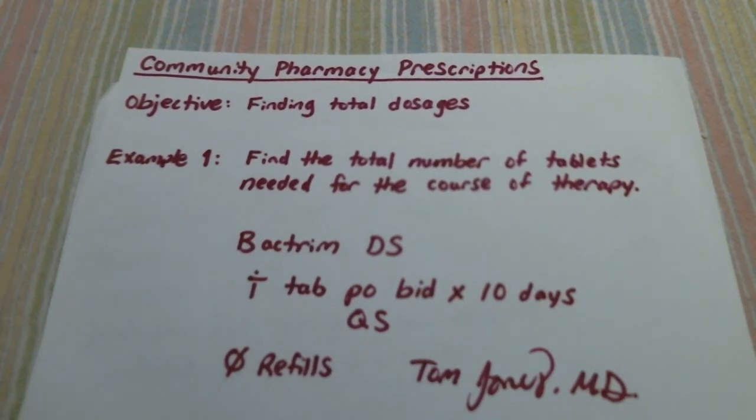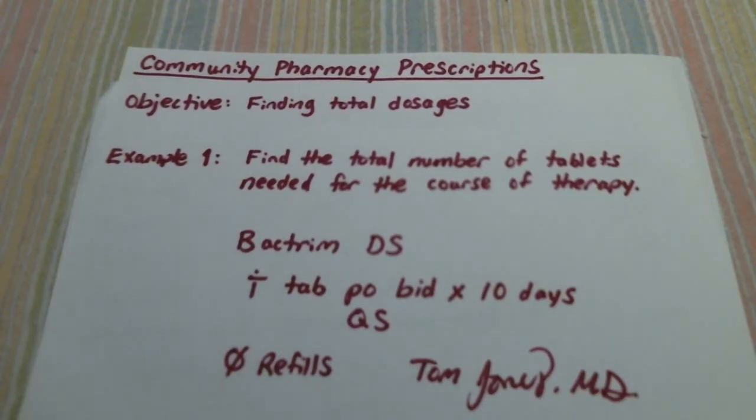If we look at example one, we want to find the total number of tablets needed for this course of therapy. This patient is receiving Bactrim DS, that's Bactrim double strength, which is 800 milligrams of sulfamethoxazole and 160 milligrams of trimethoprim. The patient is to take one tablet by mouth BID for ten days. The QS means quantity sufficient, there are no refills, and it's written by Dr. Tom Jones.